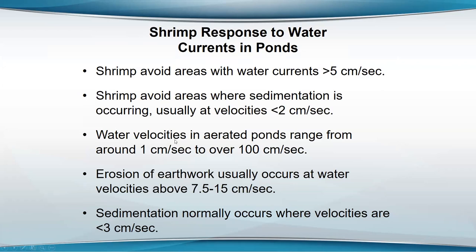The erosion of earthwork usually occurs at around 7.5 to 15 centimeters per second, while sedimentation only occurs where velocity is less than three centimeters per second. In a lot of places they've put plastic liners around the pond, or at least around the sides, to cut down earthwork erosion. That's about all I had prepared — so if anybody has questions I'd be glad to try to answer them.